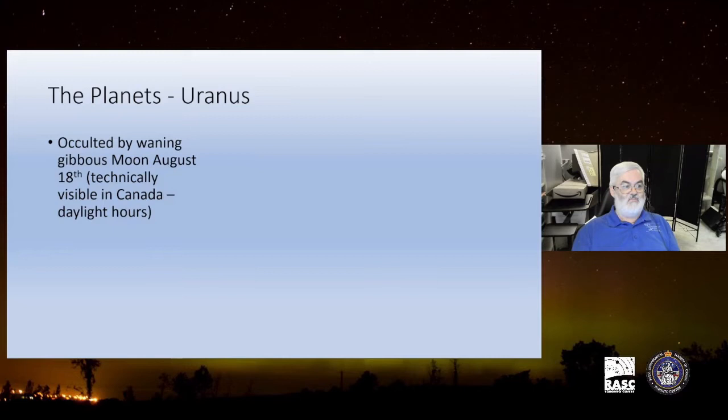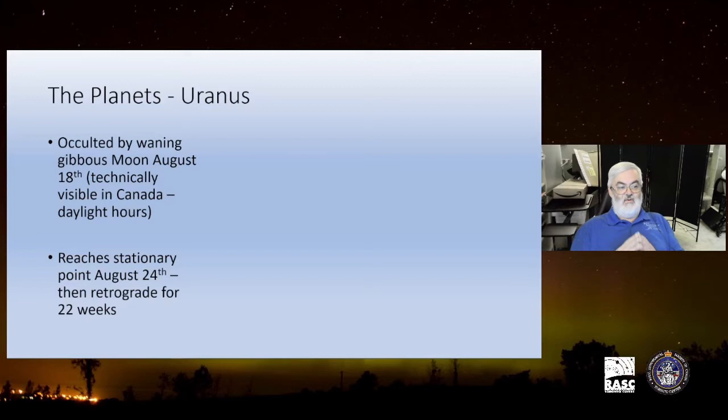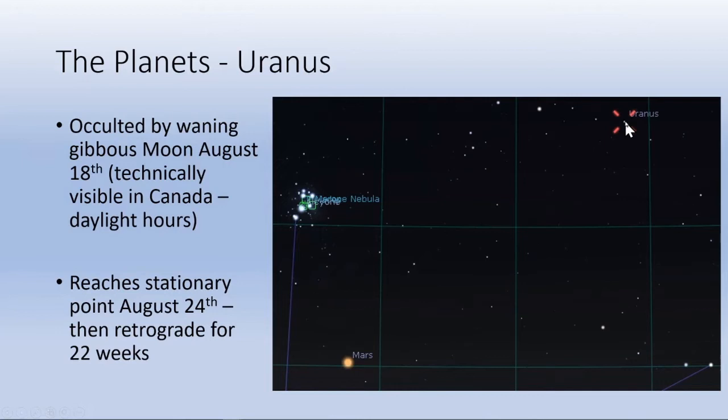The planet Uranus, it's occulted by the waning gibbous moon on the 18th. Technically it's visible in Canada, but it's in broad daylight, so fat lot of chance of really being able to get that. But Uranus is actually stationary as of August 24th and then begins retrograde motion for 22 weeks. So this will be what you'll be looking at. Here is we have the Pleiades again, Mars, and oh my lord, there's Uranus. So this is actually a right angle triangle right here.